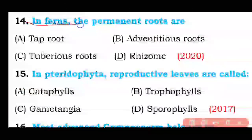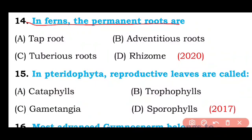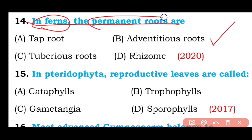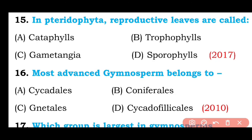Question number fourteen: In ferns, the permanent roots are taperoots, adventitious roots, tuberous roots, or rhizomes? The correct answer is option B — in ferns, permanent roots are adventitious roots.